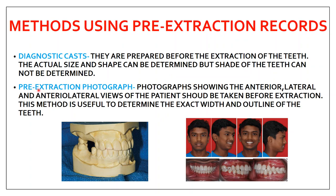The next method is pre-extraction photographs. You take various angulation photographs of the patient and use them for teeth selection. Photographs showing the anterior, lateral, and anterolateral views of the patient should be taken before extraction. This method is useful to determine the exact width and the outline of the teeth.